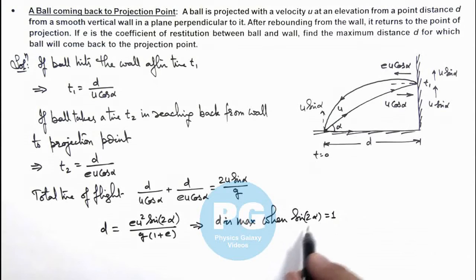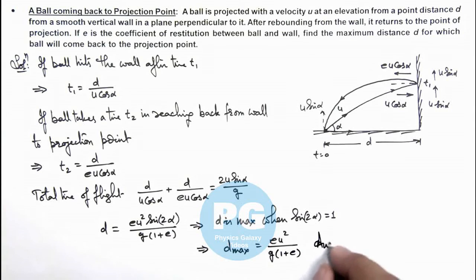Which happens when alpha is equal to 45 degrees, and which gives us the maximum value of d that is equal to e·u² divided by g multiplied by 1 plus e - that is the final result of this problem.